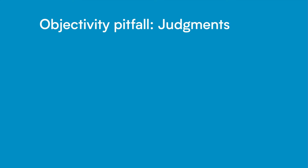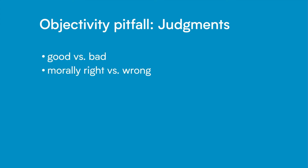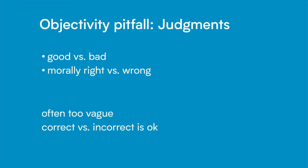The fourth pitfall is making judgments of things being good versus bad and right versus wrong. These are often vague and subjective and not useful. Here we're talking about subjective notions of right versus wrong, such as moral judgments or ideas of what is appropriate. We also use the terms right or wrong to mean correct or incorrect — as long as it's referring to facts, this is objective and okay to use. However, in these circumstances, it's often still better to use the terms correct versus incorrect rather than right or wrong.